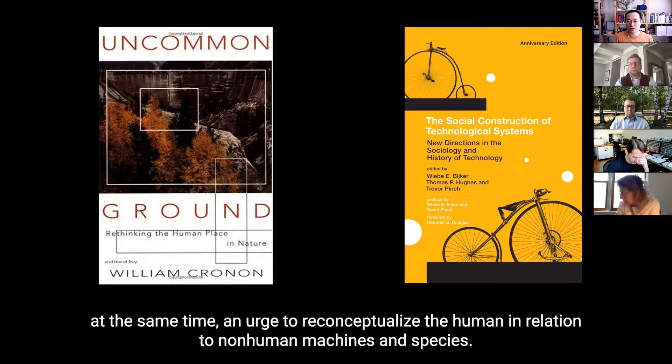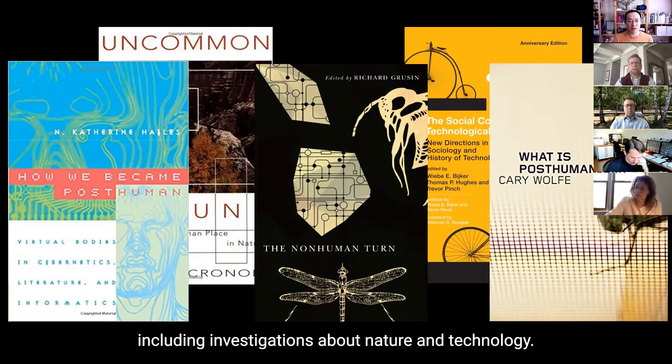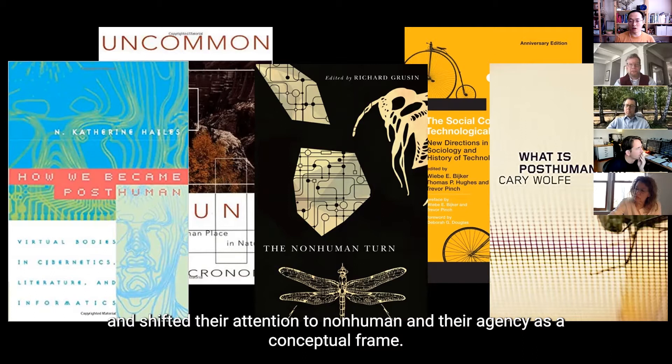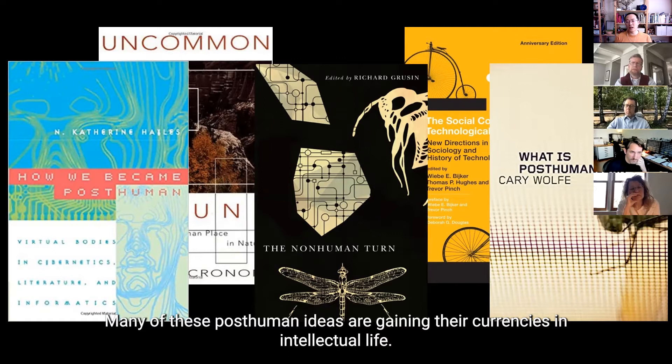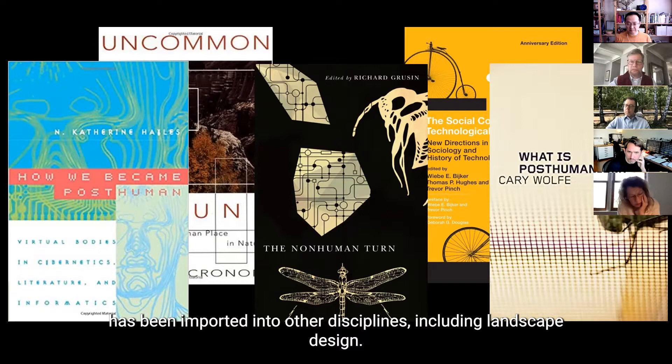So what is emerging from this body of work is an inherent critique of anthropocentrism and human exceptionalism. And at the same time, there's an urge to reconceptualize the human in relation to non-human machines and species. So that's why towards the 21st century, we have seen a rise of post-humanism across fields, including the fields investigating nature and technology. So many scholars turned their attention away from critiquing nature and wilderness and shifted their attention to non-human and non-human agency as a conceptual frame.